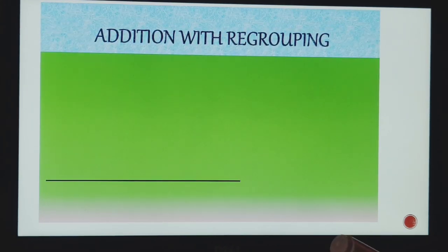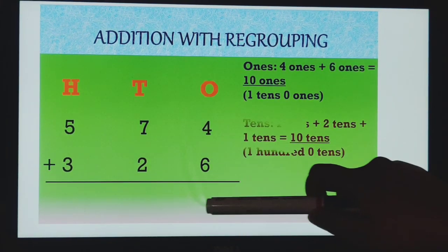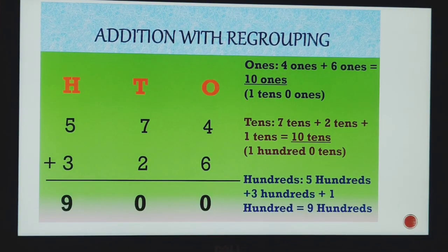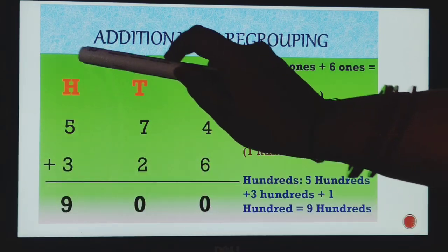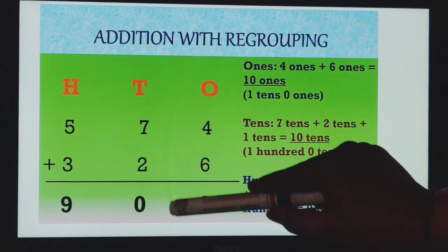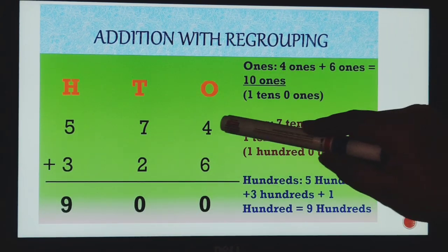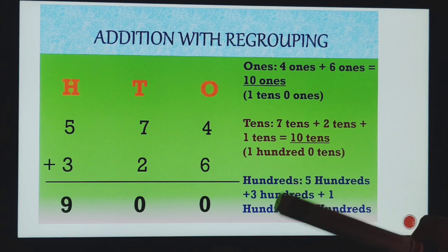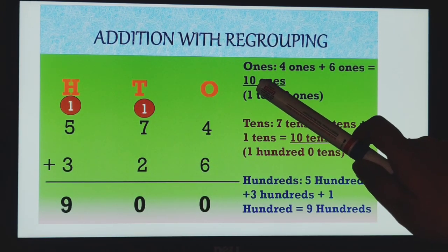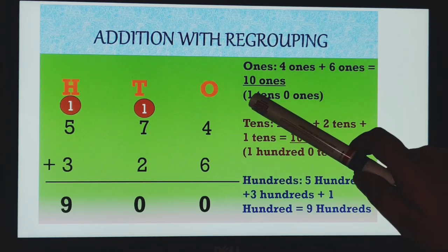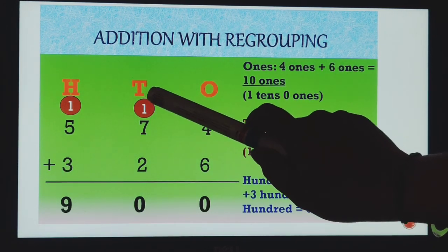Okay, now we will teach you addition with regrouping. As we all know, this column is of ones place, this column is of tens place, and this column is hundreds place. Now, how we will do the regrouping? First, we will do the addition of ones place. That is 4 ones and 6 ones. What answer we will get? We will get answer 10. So again this 10, we will expand it. How we will expand? Because 0 is in ones position, and 1 we will carry forward to tens place.